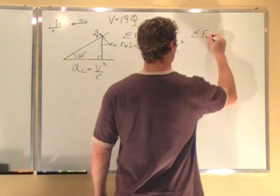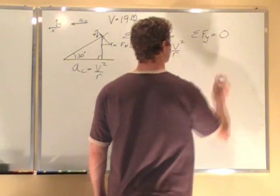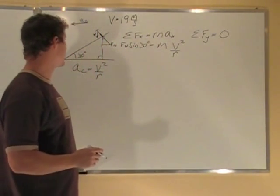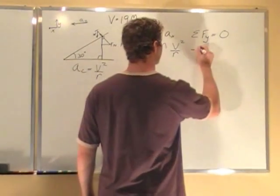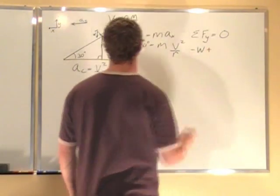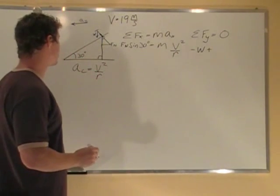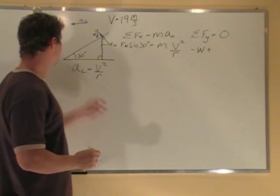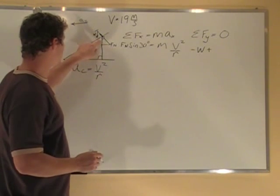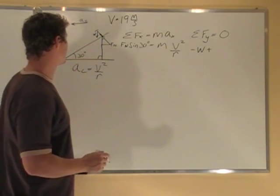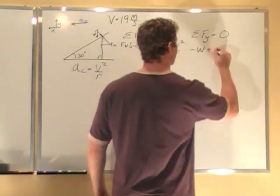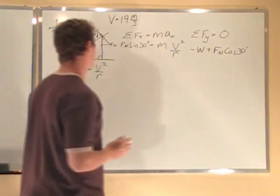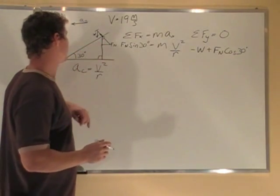Sum of the forces in the y direction equals zero because there's no acceleration in the y direction. So we can say that negative weight plus, now there's going to be a positive portion of the normal force. We have cosine is adjacent over hypotenuse, so Fn cos 30. That's our y component of the normal force.